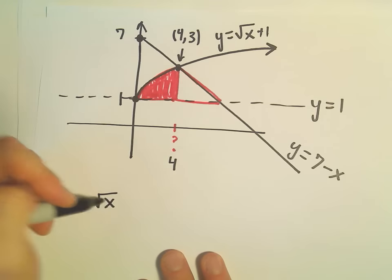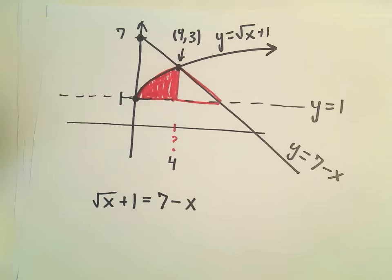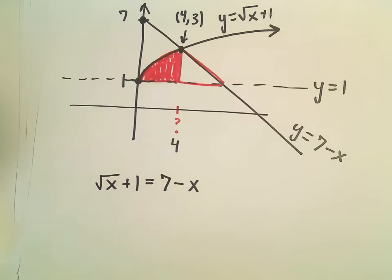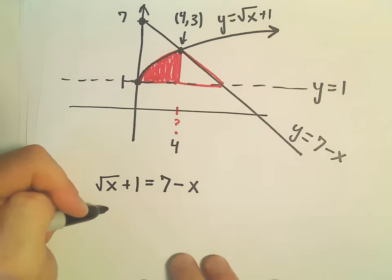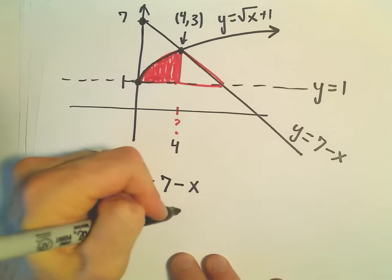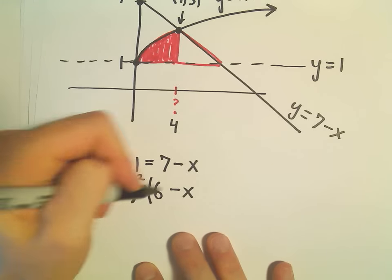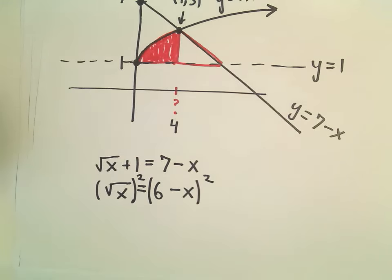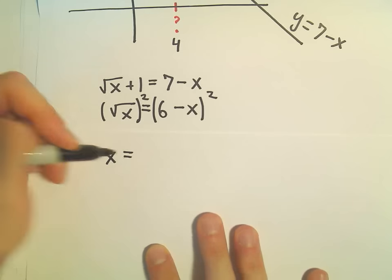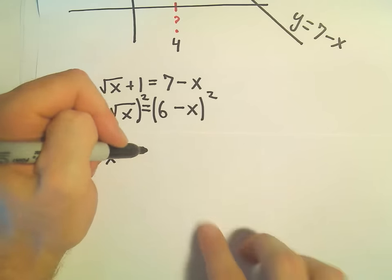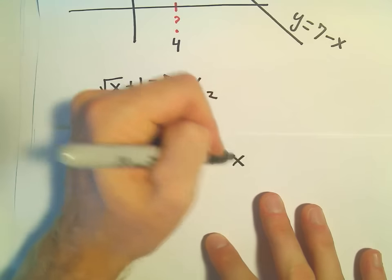But to figure that out, we can just set things equal to each other. So the square root of x plus 1 equals 7 minus x. And recall, to solve these types of equations, basically we try to isolate the radical. So I'll do that by subtracting 1 from both sides. So that'll give us 6 minus x. And then we square both sides to get rid of the square root. So the square root of x squared is x. This would be 6 minus x times 6 minus x, which would give us 36 minus 12x plus x squared.